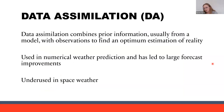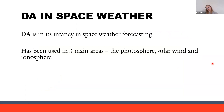This is where data assimilation comes in. Data assimilation, or DA, combines prior information — usually from a model — with observations to find an optimum estimation of reality. It's been used a lot in terrestrial weather forecasting and has led to really large forecast improvements, but it has been really underused in space weather. In space weather it's been used in three main areas: the photosphere, the solar wind, and the ionosphere. It's most advanced in the ionosphere, a bit less in the photosphere, and really not used at all in the solar wind, which is where my project and some of the work at Reading comes in.